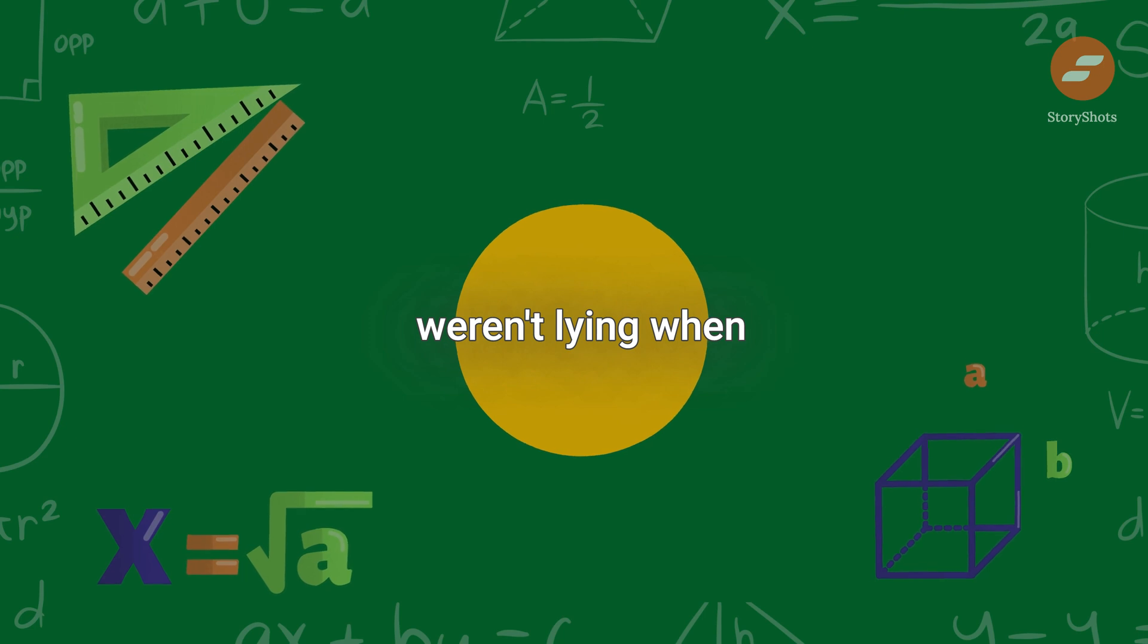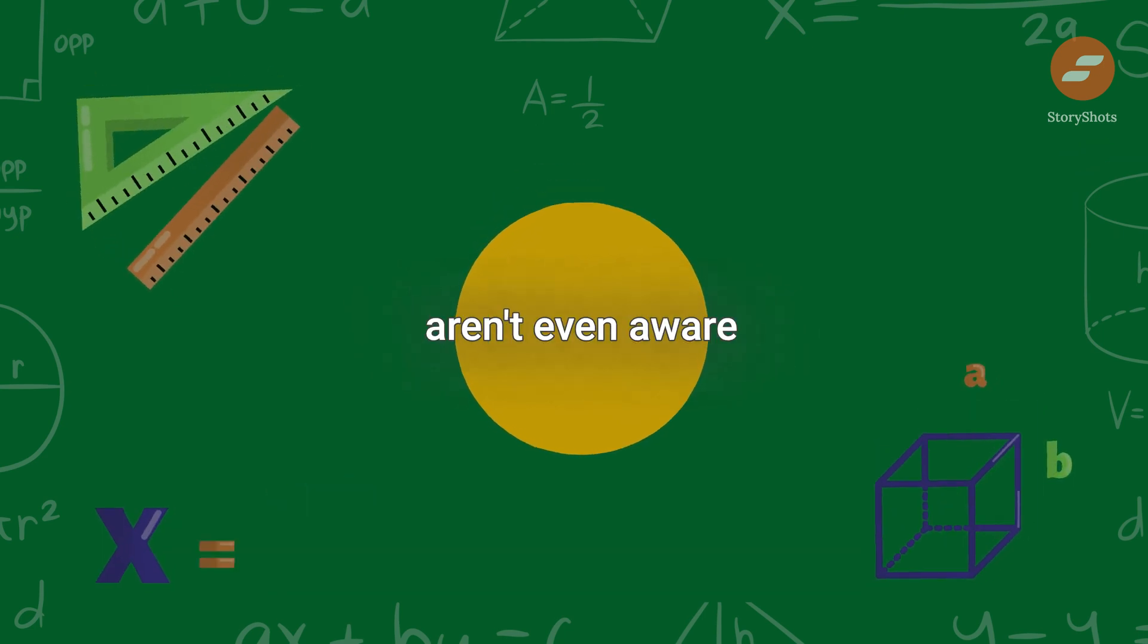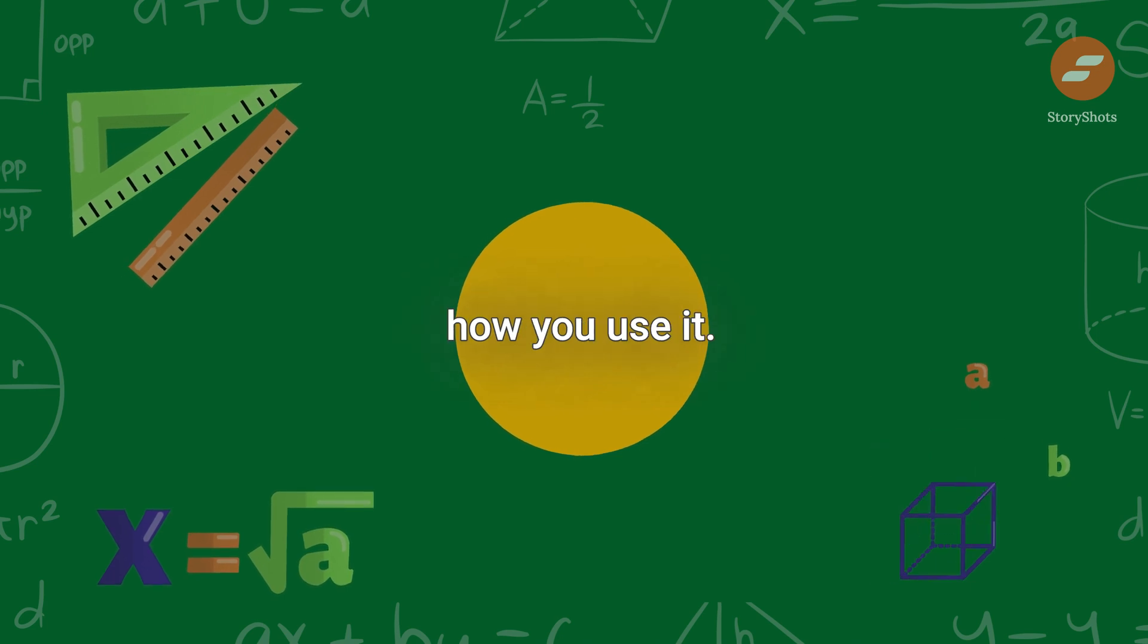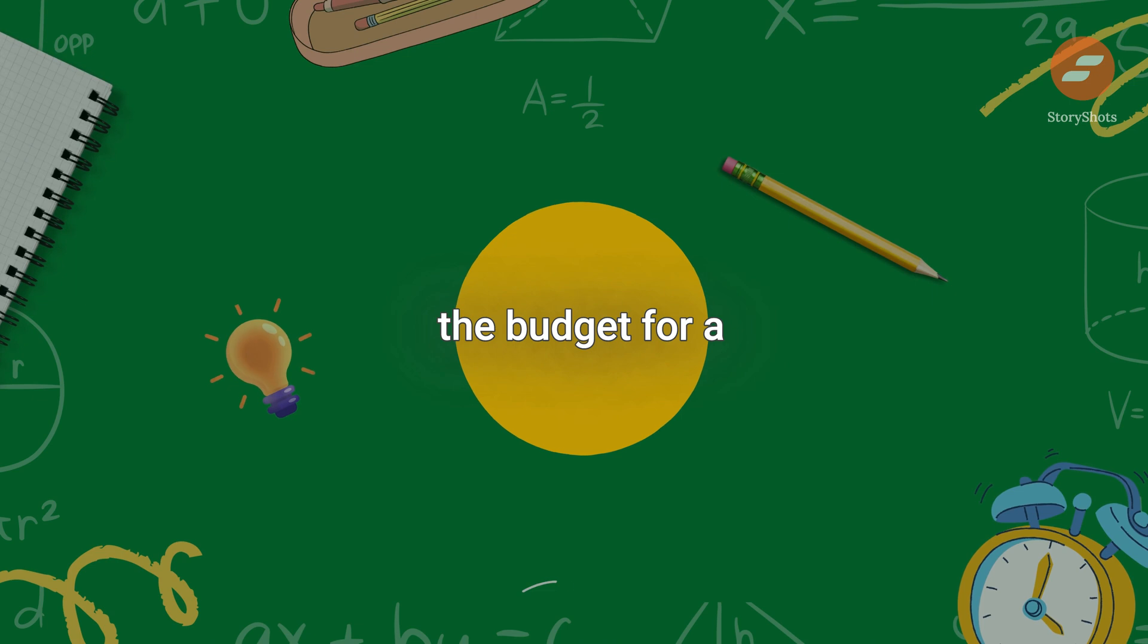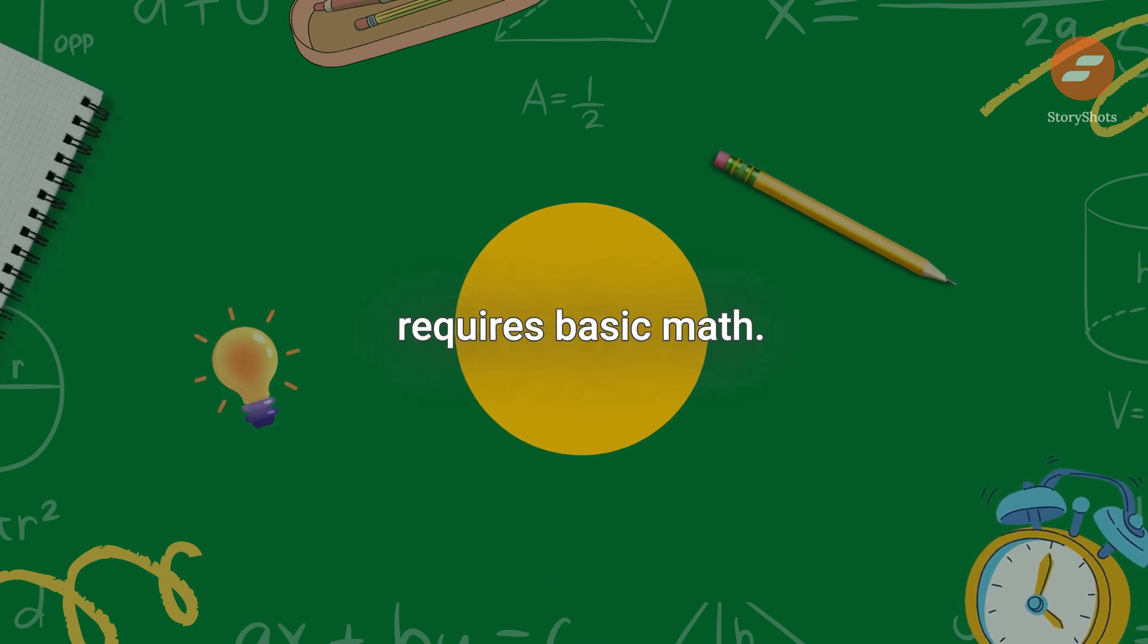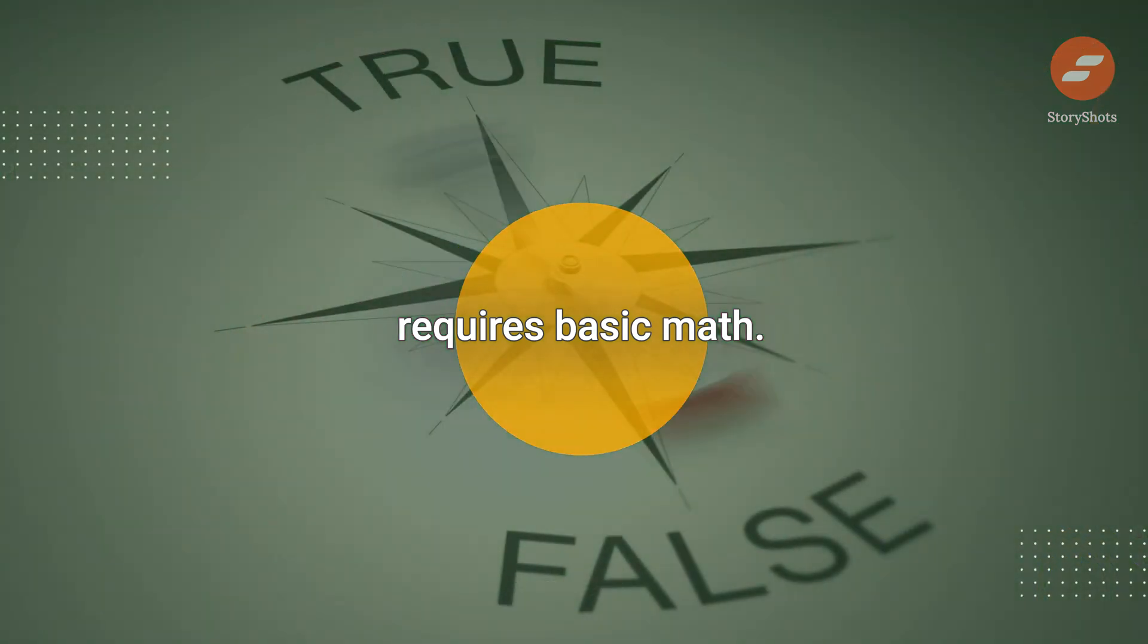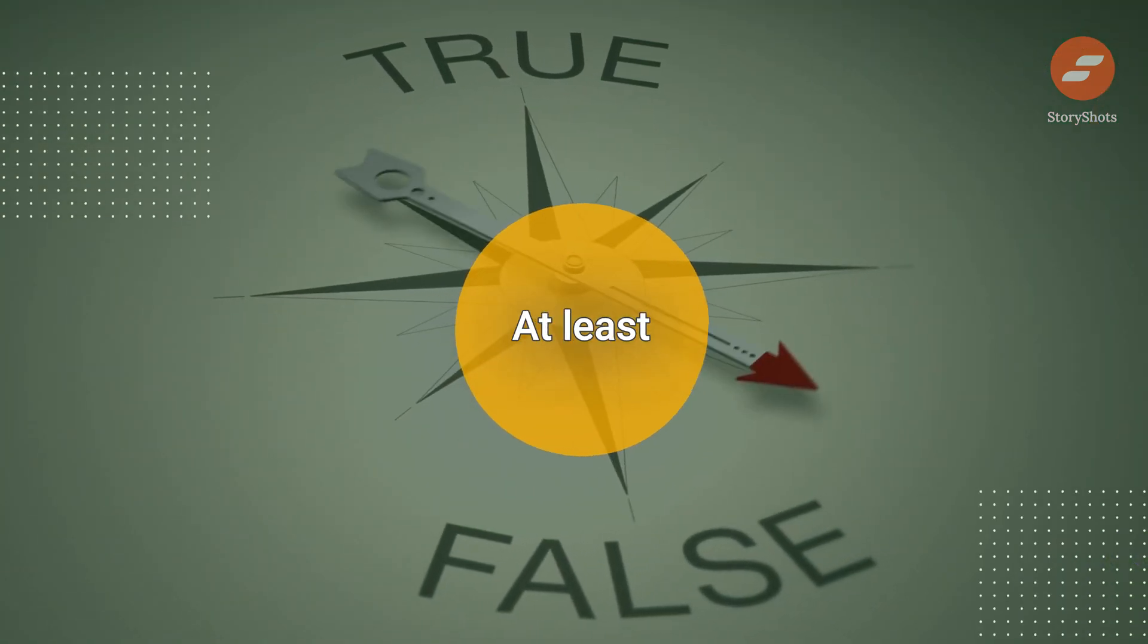Your teachers weren't lying when they said you would use math every day, and you probably aren't even aware of when and how you use it. Calculating the length of your work commute or the budget for a night out, and even the timing of your French press coffee, requires basic math. With this in mind, being right constantly is possible, at least theoretically.